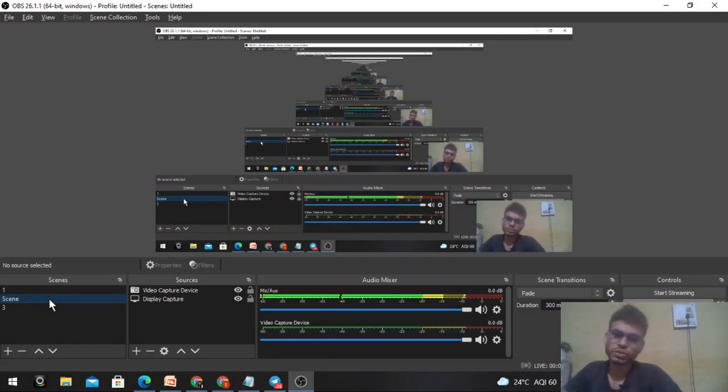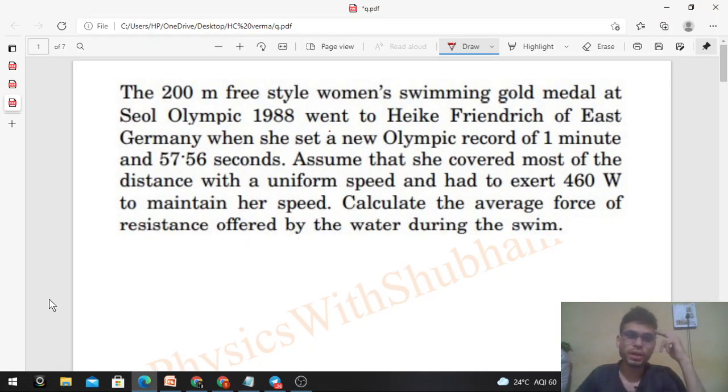Hi everyone, today let's discuss this interesting problem. The 200 meter freestyle women's swimming gold medal at Seoul Olympics 1988 went to Heike Friedrich of East Germany when she set a new Olympic record of 1 minute and 57.56 seconds. Assume that she covered most of the distance with a uniform speed and had to exert 460 watts to maintain her speed. Calculate the average force of resistance offered by the water during the swim.